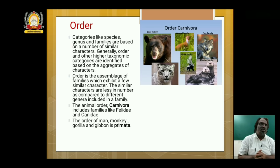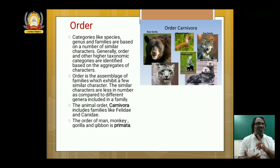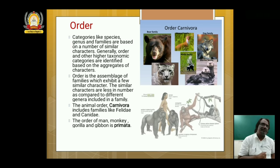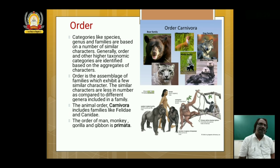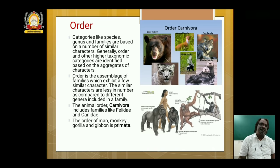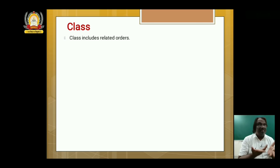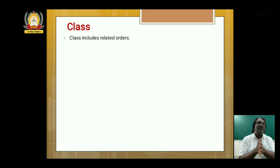What about human beings? The order of man, monkey, gorilla, gibbons, chimpanzees and apes all come under Primates. This is our order, including individuals of different families. Above that comes a class — all this comes under the higher class called Mammalia in case of animals. Class includes related orders.